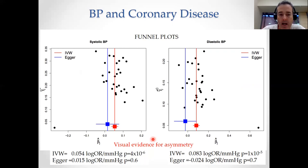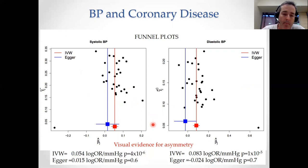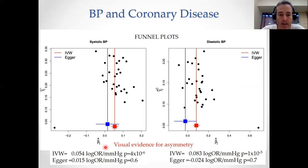The fact that the intercept test is floating around the 0.05 level again should be an orange flag. And interestingly, when we look at the funnel plot results, they look very different from before. Instead of having that nice funnel shape as in the height and lung function example, there's very much a skew on these funnel plots. This visual asymmetry is an indicator of potential horizontal pleiotropy, telling you that pleiotropy may be an issue in your dataset and the results should be treated with caution.